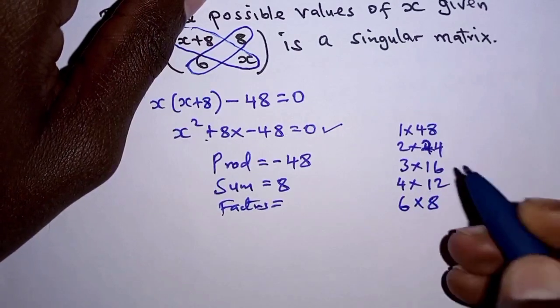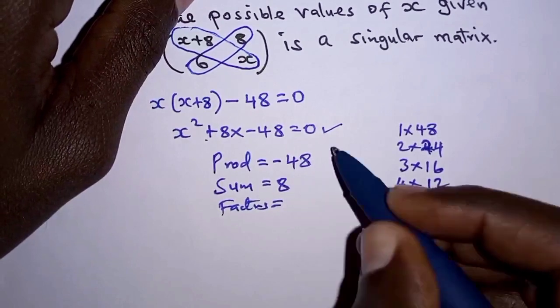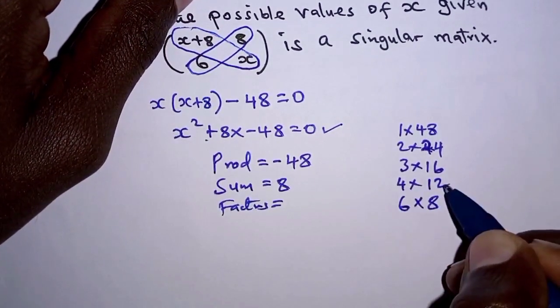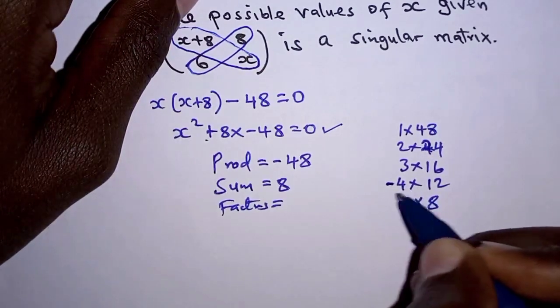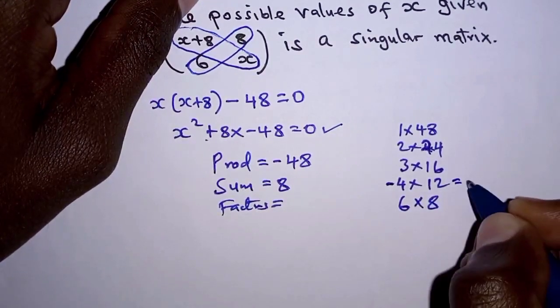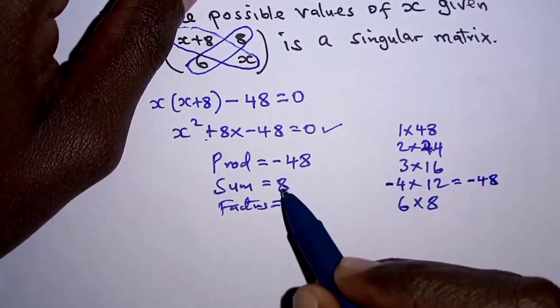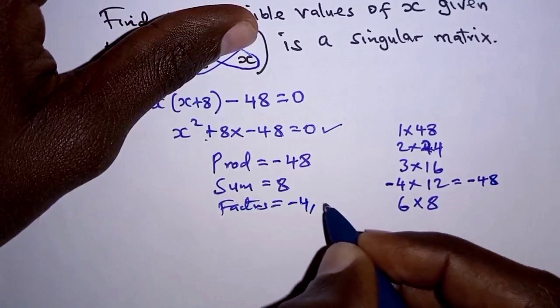We look for a pair that satisfies this condition. The pair is 4 and 12. If we make 4 negative, then -4 × 12 = -48, and if we add them, we get 8. So we have -4 and 12.